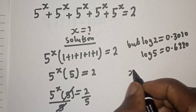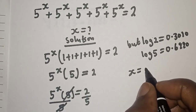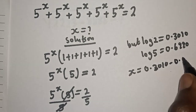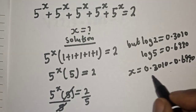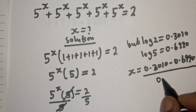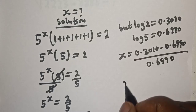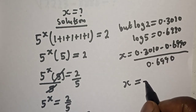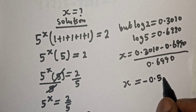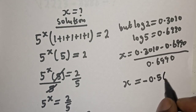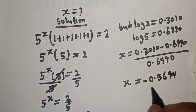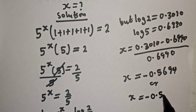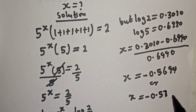So s is equal to (0.3010 minus 0.6990) over 0.6990. Separating and dividing, we get s is equal to minus 0.5694, or s is equal to minus 0.57 to two decimal places.